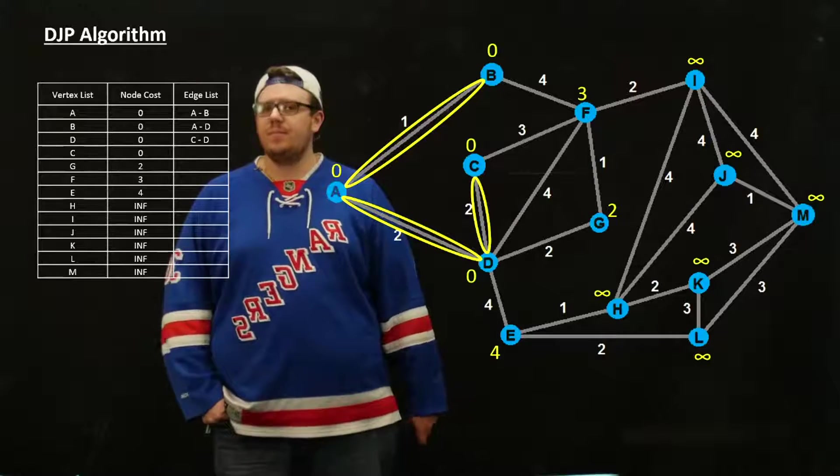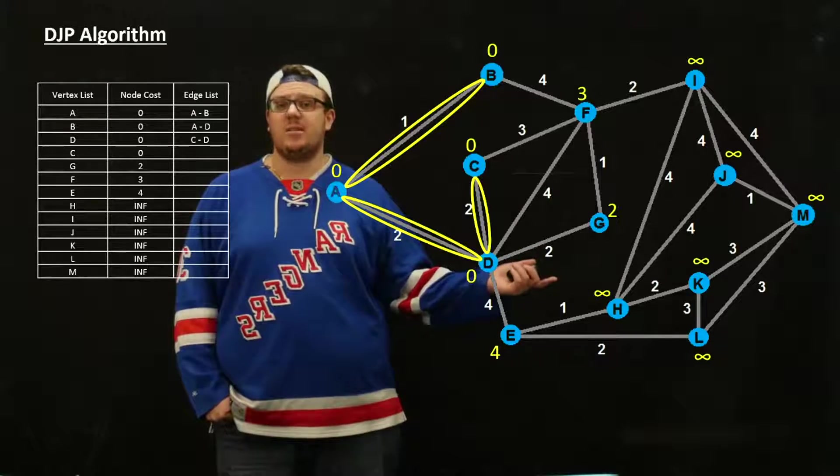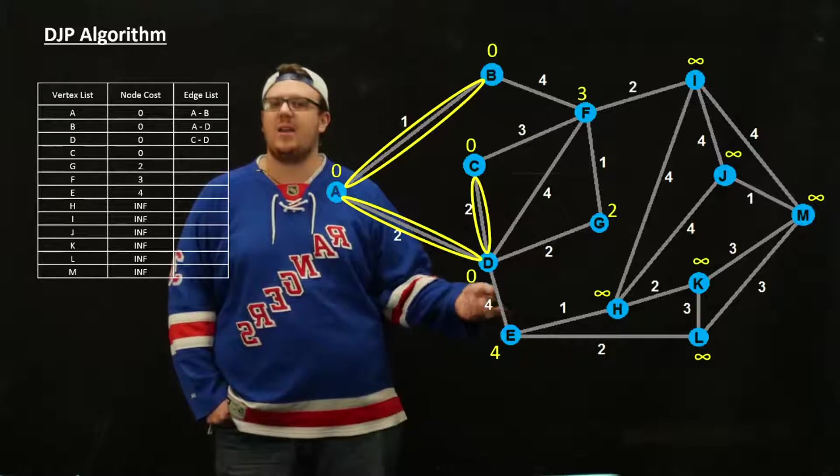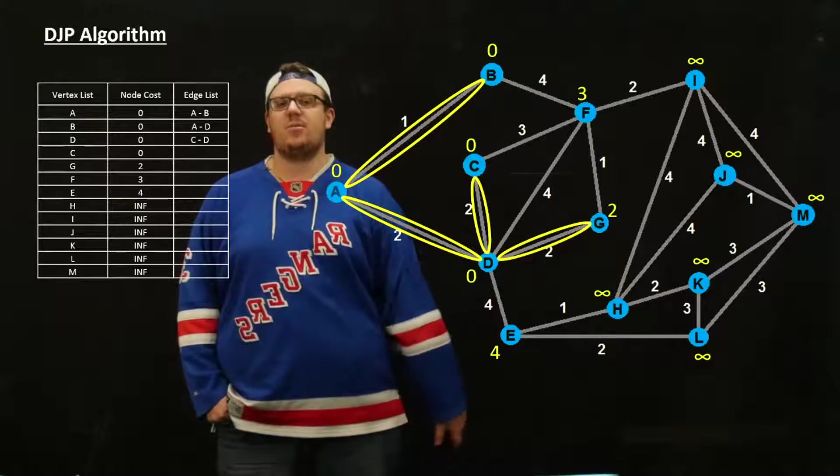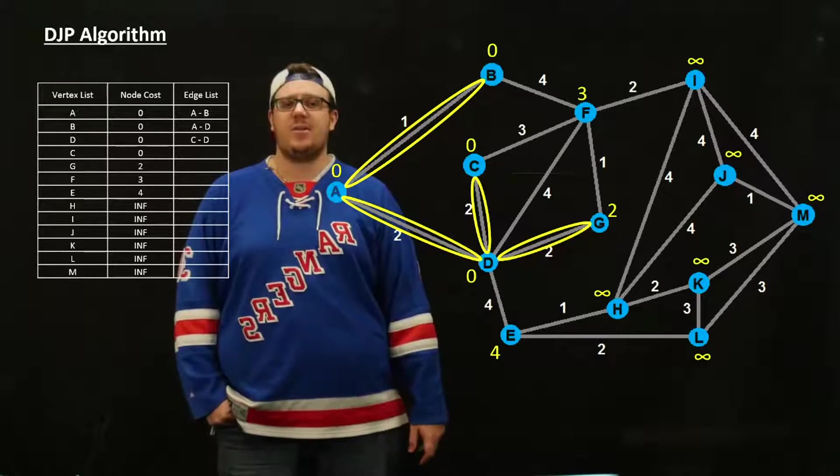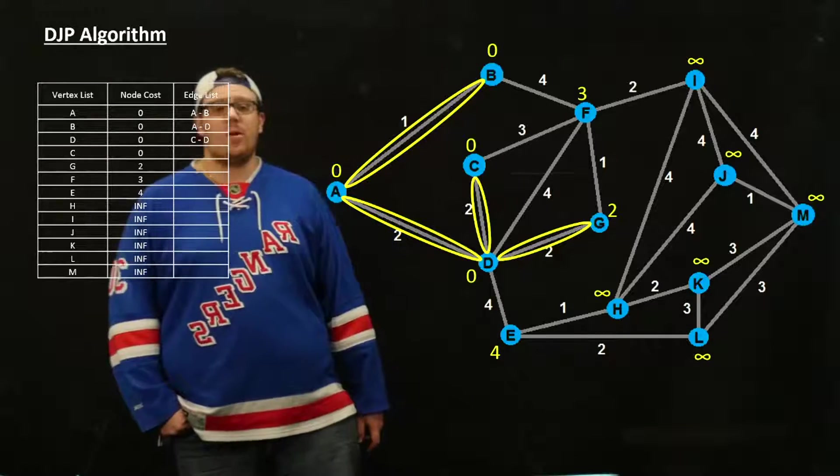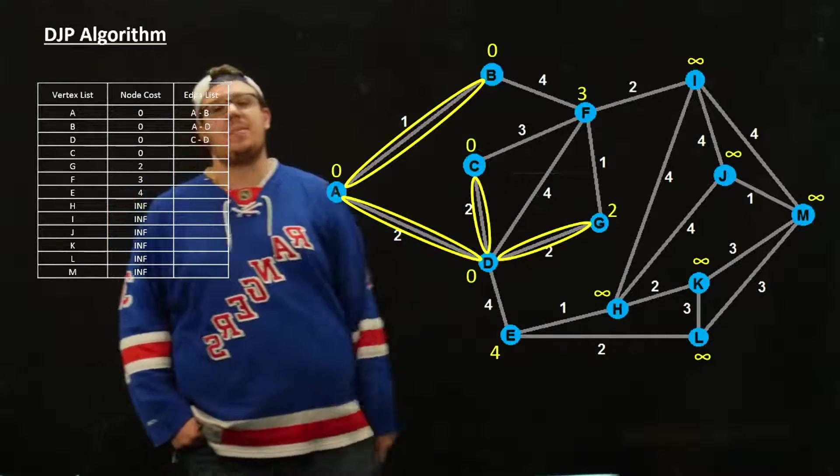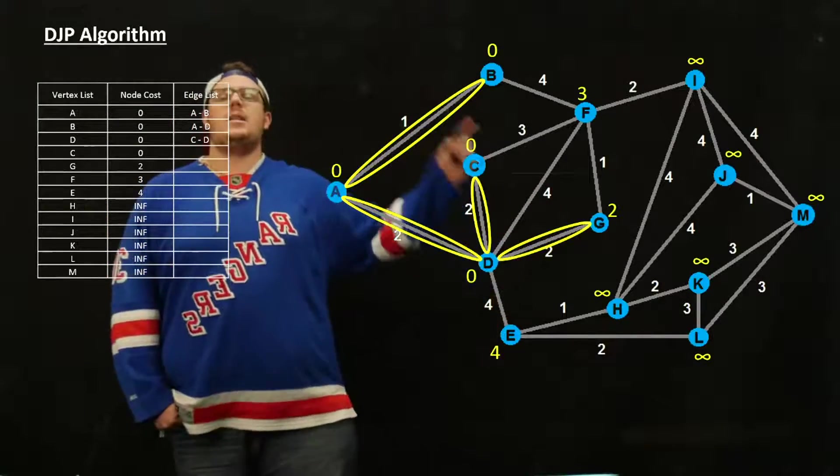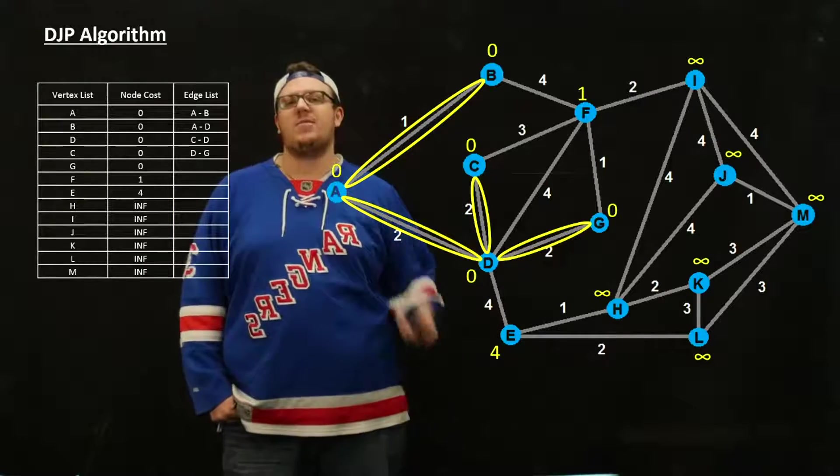At this point, the next closest one is still G, so we ended up using both of them anyway. We add G to our tree by making it zero, and we're going to update F because F is now only 1 away.